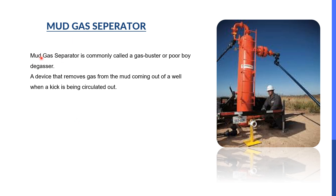The last equipment is the mud gas separator, commonly called the gas buster or poor boy degasser — it has three names: mud gas separator, gas buster, and poor boy degasser. The mud gas separator is a device that removes gas from the mud coming out of a well when a kick is being circulated and controlled. The separated gas is later sent to the flare for flaring.